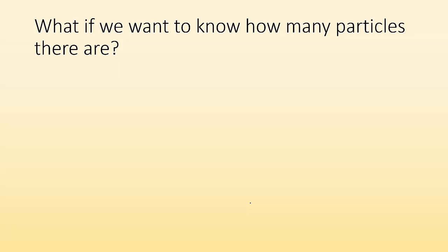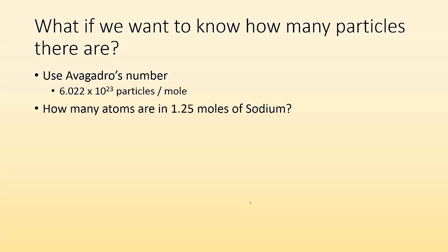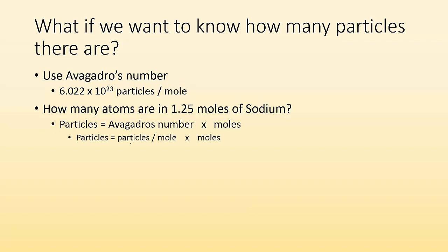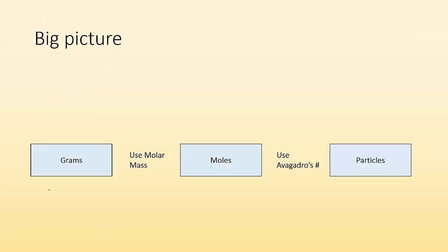What if we want to know how many particles there are instead of how many moles? You're going to have to use Avogadro's number, which is 6.022 times 10 to the 23 particles per mole. For example: how many atoms are in 1.25 moles of sodium? Particles equals Avogadro's number times moles. So 6.022 times 10 to the 23 particles per mole times 1.25 moles — moles cancel — and I get 7.53 times 10 to the 23rd particles.